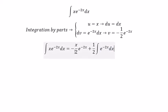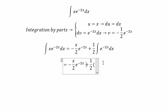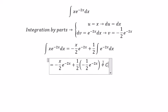This equals negative 1 over 2. In this situation, we get negative x over 2 e to the power of negative 2x, and we have C here.